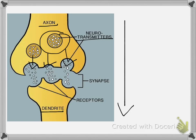Those chemicals then move from the axon of one neuron to the dendrite of another neuron, and this space that they move across is called the synapse. On the other side of the synapse is the waiting dendrite, and it has little receptor regions that are receiving the information.